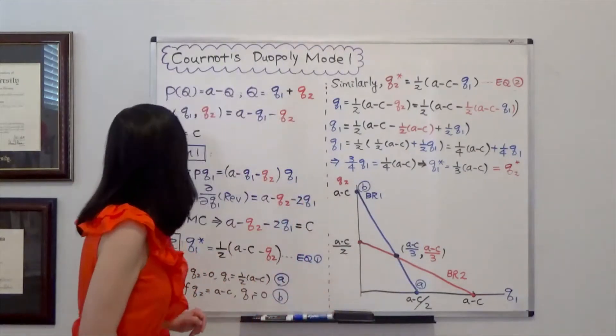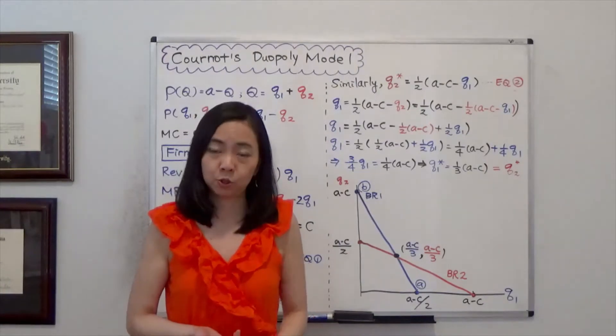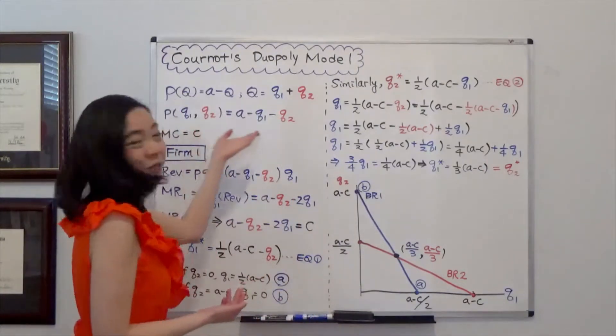So here we have two firms. These two firms are identical, firm 1 and firm 2. And they share the market.